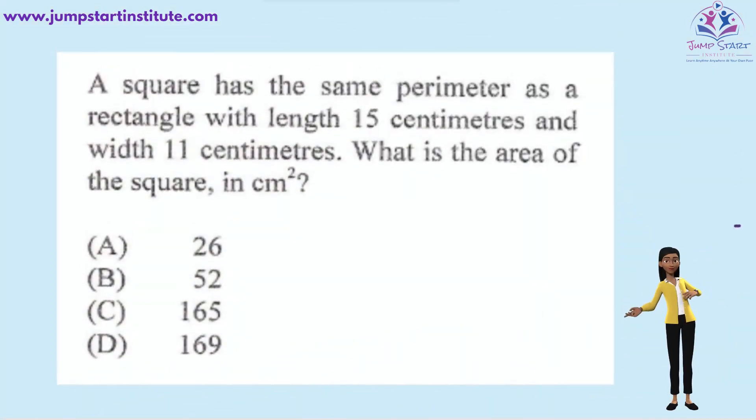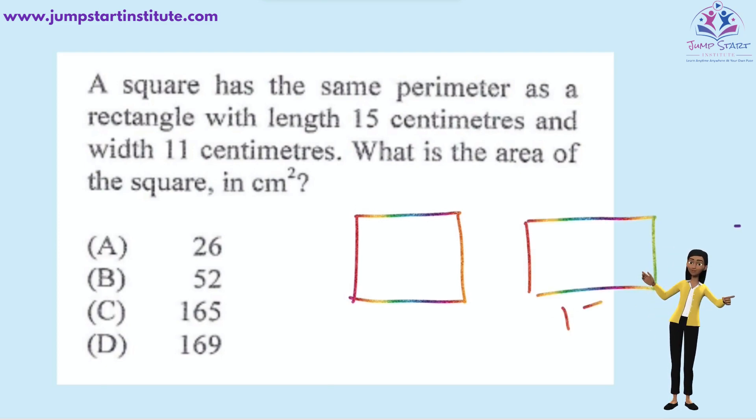A square has the same perimeter as a rectangle with the length 15 centimeters and width of 11 centimeters. So, it means that up here will also be 15 and here will also be 11. The question went on to ask, what is the area of the square? So, first, we need to calculate the perimeter of the rectangle.